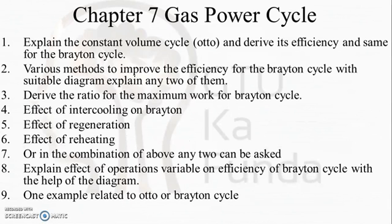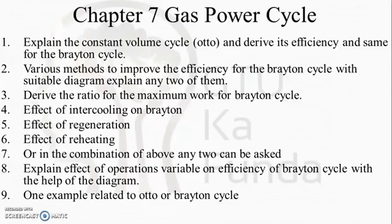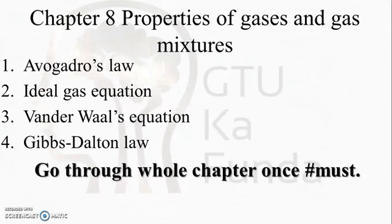In the gas power cycle, topics include the constant-volume Otto cycle with derivation of efficiency, and the Brayton cycle derivation. There will be examples of the Otto or Brayton cycle, effect of heat regeneration and intercooling on the Brayton cycle, and one example from Otto or Brayton cycle. GTU mainly asks examples from vapor power cycle and gas power cycle in the compulsory section, so you cannot skip these chapters.